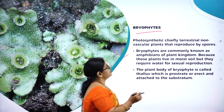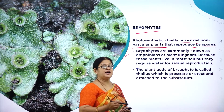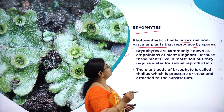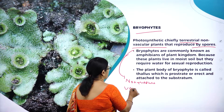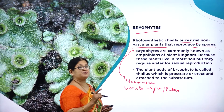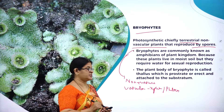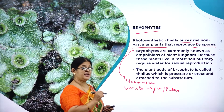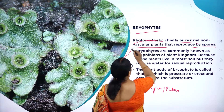Bryophytes are photosynthetic, chiefly terrestrial, non-vascular plants that reproduce by spores. What do we mean by non-vascular plants? Vascular means those plants which have xylem and phloem as their vascular tissues - such plants are called vascular plants. Xylem is a water conducting tissue and phloem is a food conducting tissue, but these vascular tissues are absent in bryophytes, hence they are called non-vascular plants.